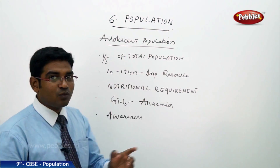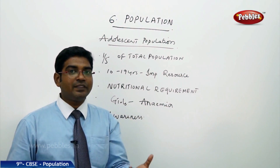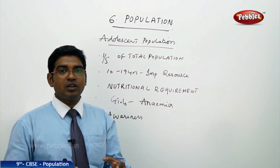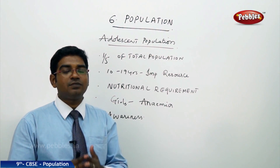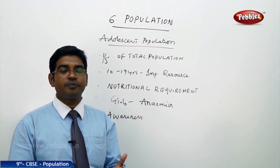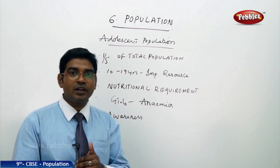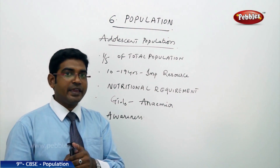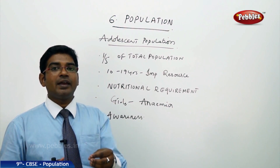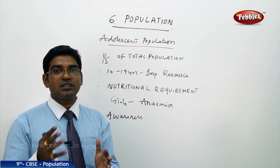The nutritional requirements of the adolescent group are very high compared to other age groups. In practice, in India, sufficient nutritional food is not available to people of this age group. Especially among girls, many aged 10 to 19 years are suffering from anemia, as they are not getting the complete nutritional food required as per their age, which leads to serious health problems.